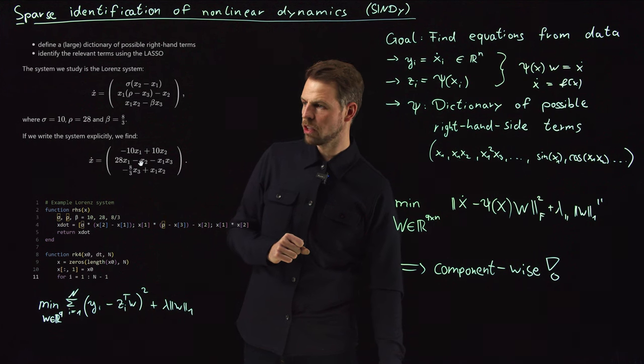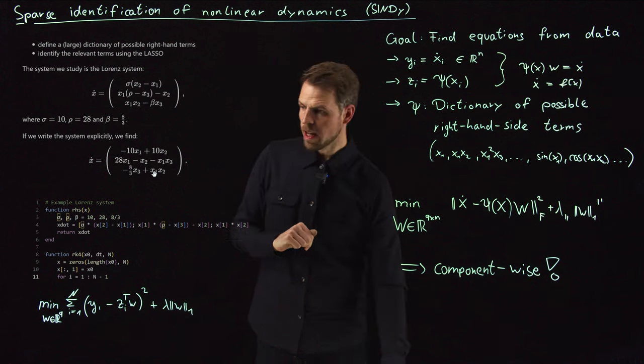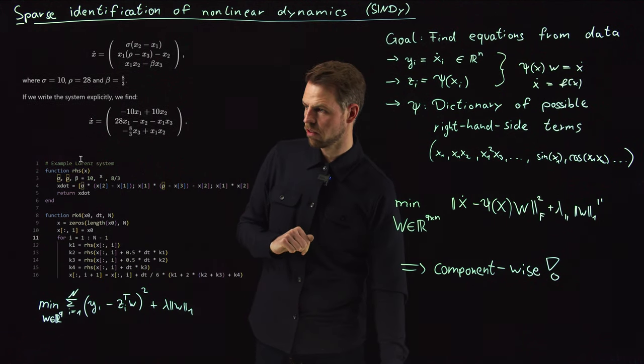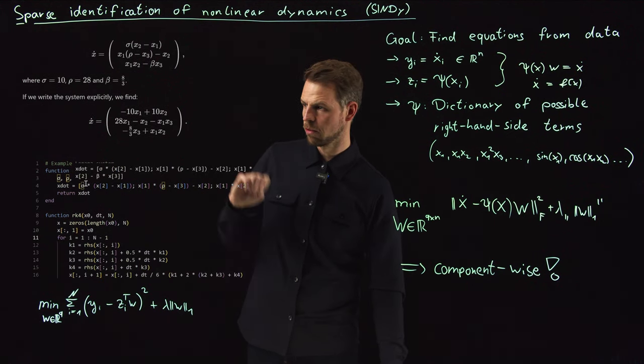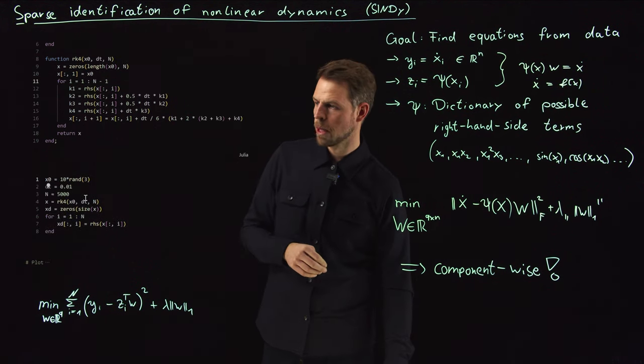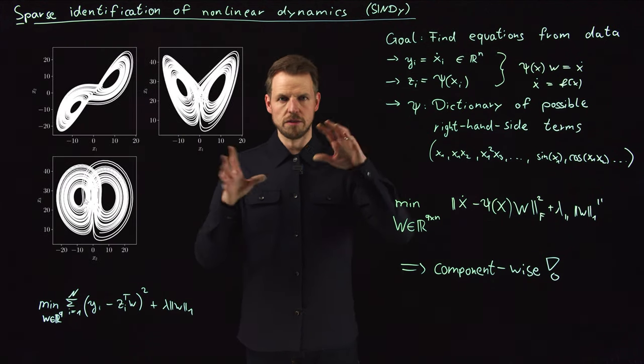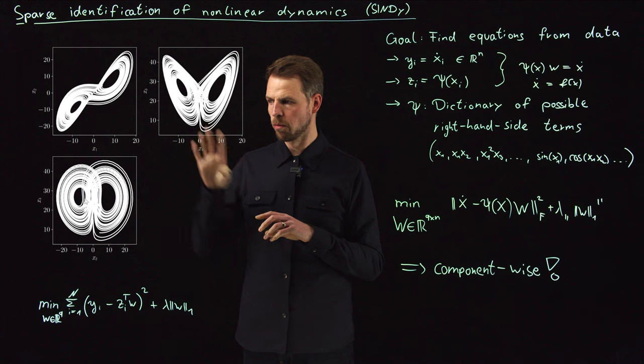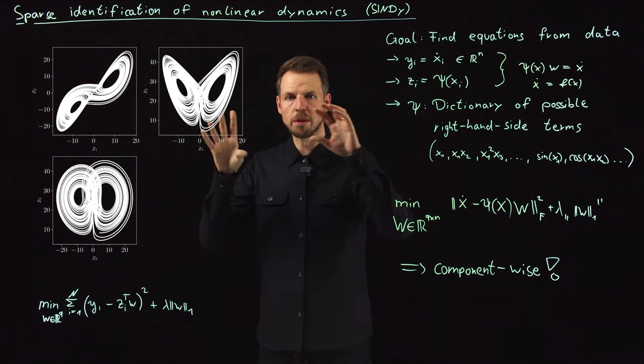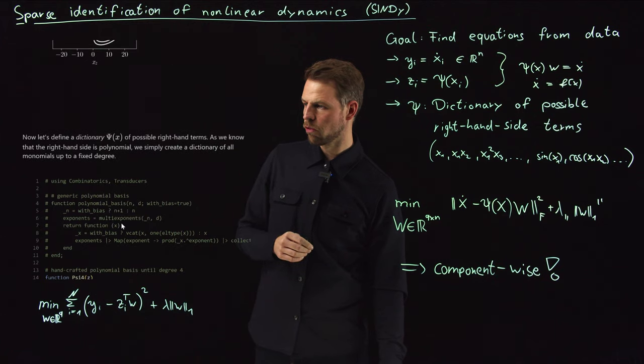Then there's a 28x1 minus x2 minus this product x1x3. And here you have minus 8 over 3x3, and another non-linear term x1x2. The right-hand side is just defined here, exactly as it is above. Then we can use a Runge-Kutta scheme of fourth order to do the time series prediction. What you get over a certain period of time, you get this very well-known Lorenz attractor from three different projections, so this butterfly-like shape.